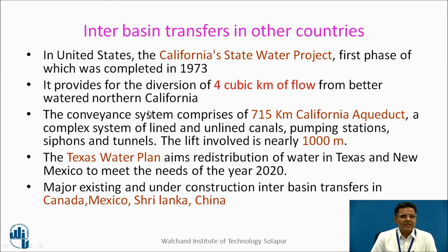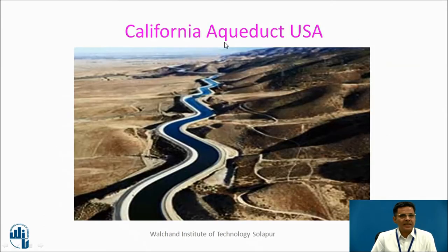Interbasin transfers in other countries: we find the California State Water Project, the first phase of which was completed in 1973. The Texas Water Plan is also an interbasin transfer. Interbasin transfers are also undertaken by Canada, Mexico, Sri Lanka, China, and many more countries. This is the California Aqueduct from the USA.